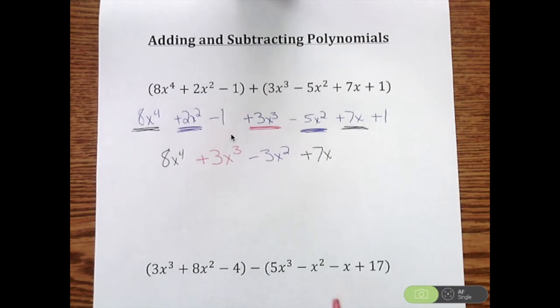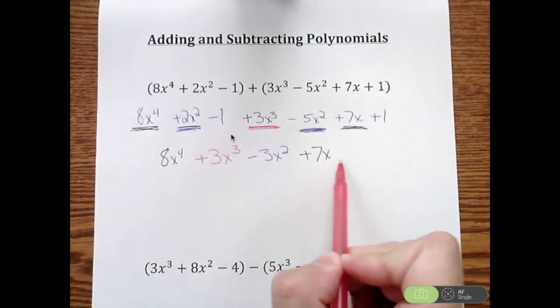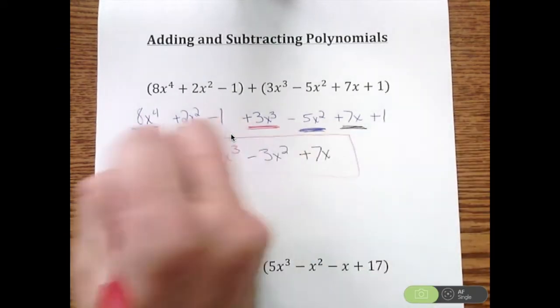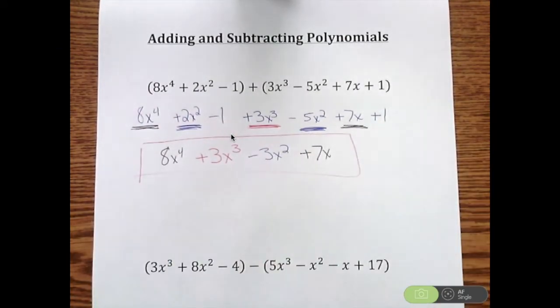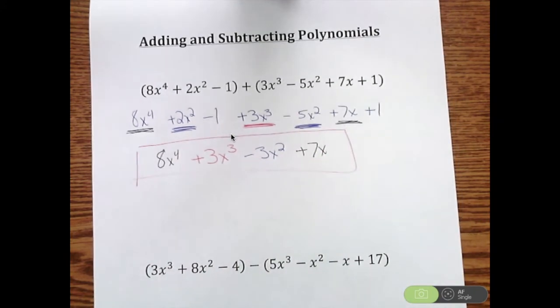And then last, I go to my constant, my numbers, my terms without variables. So I have a negative 1 plus 1, which is 0. I'm not going to put the plus 0. So I end up with that as my solution. This is in standard form because it goes from the highest power all the way down to the lowest power.